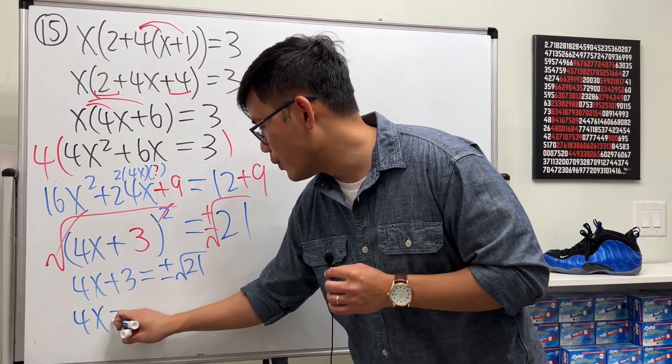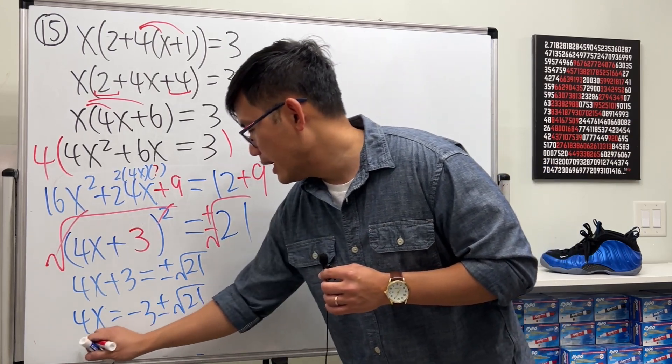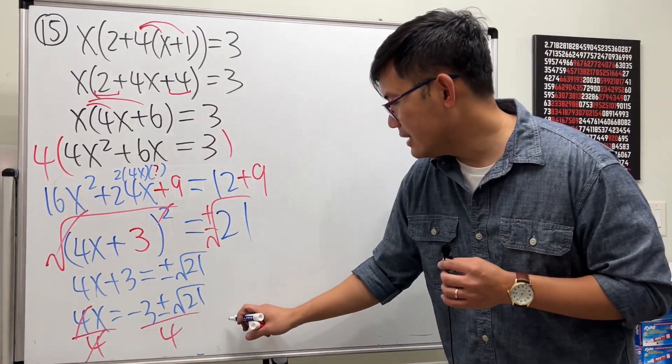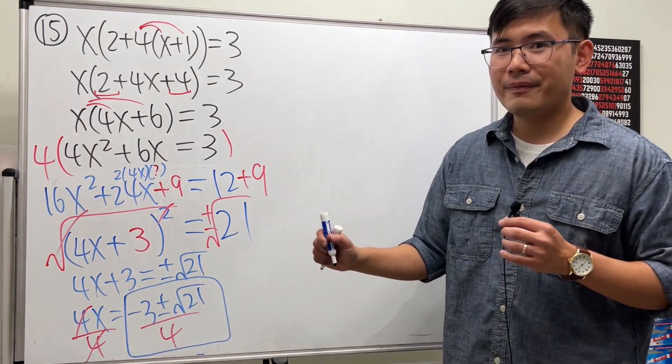Minus 3 on both sides, so this is 4x equals negative 3 plus or minus √21. At the end, divide this by 4, cancel this, and ladies and gentlemen, this is the answer. I'll just box it like this.